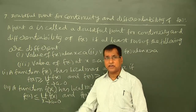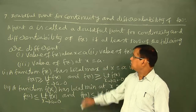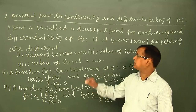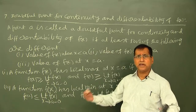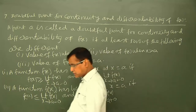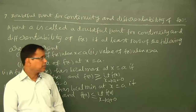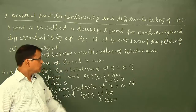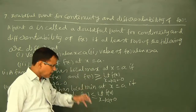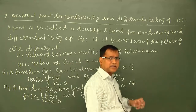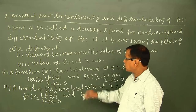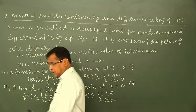اور اگر کسی function f(x) کا اس point A پر — جو continuity and differentiability کے لیے doubtful point ہے — یعنی یہاں پر function continuous نہیں بھی ہو سکتا، differentiable نہیں بھی ہو سکتا — تو function f(x) کا اس point پر local maximum ہونے کا condition اور local minimum ہونے کا condition کیا ہوگا؟ تو ہم یہاں limit سے compare کرتے ہیں۔